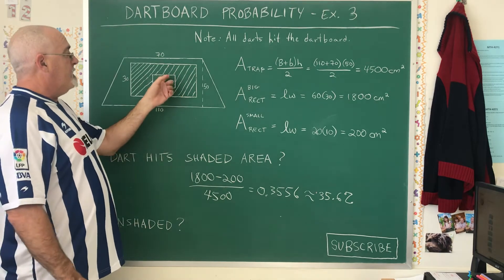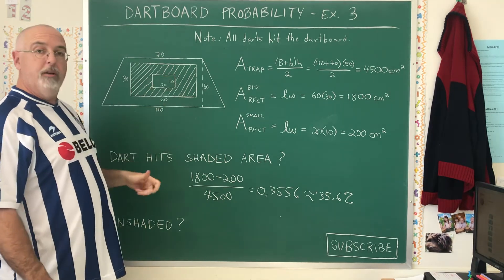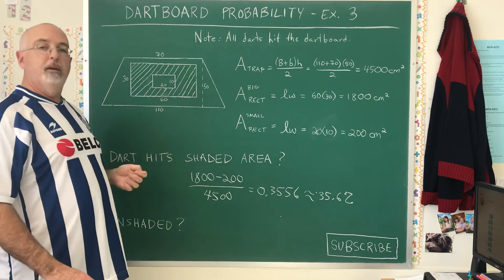Therefore, unshaded and shaded have to add up to 100%. So my shortcut is to take 100% subtract the probability of hitting the shaded region.